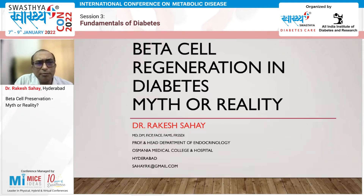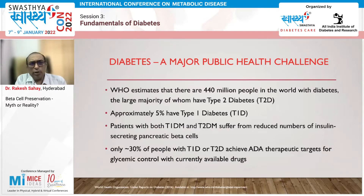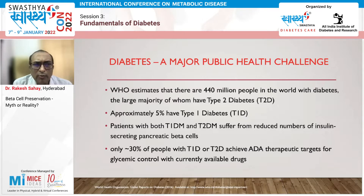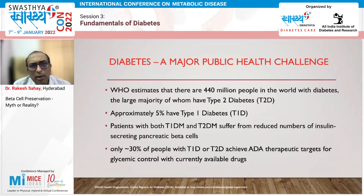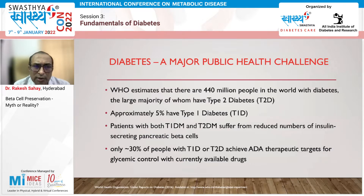If you look at diabetes, we know it is growing in leaps and bounds — a major public health challenge today. We have more than 440-450 million people with diabetes across the world. The majority is type 2 diabetes, and 5% is type 1 diabetes.